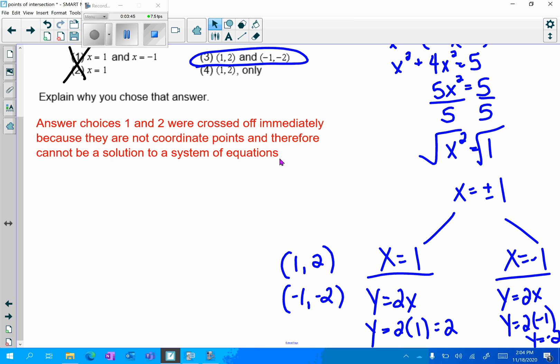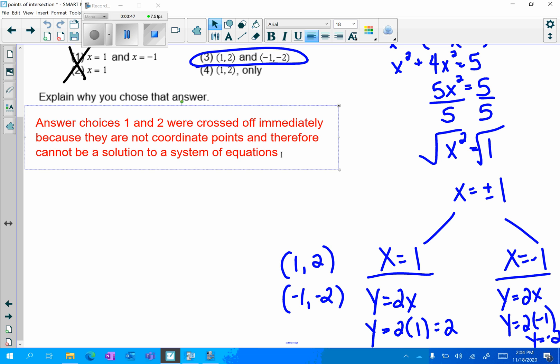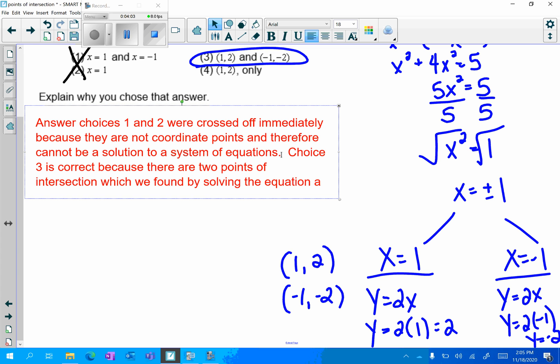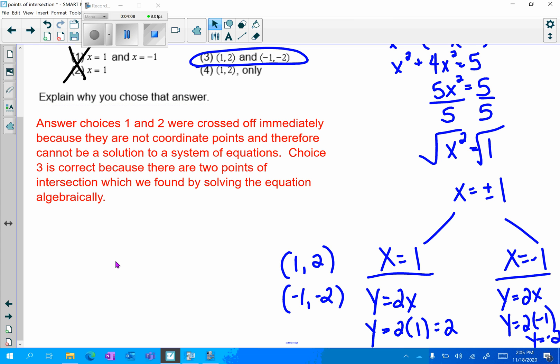So we can go back and add to our explanation: choice 3 is correct because there are two points of intersection which we found by solving the equation algebraically. This is multiple choice. I was able to knock it down to two answers right away and then I could plug in from there if I needed to, or we solved it algebraically. Let's take a look at example two.